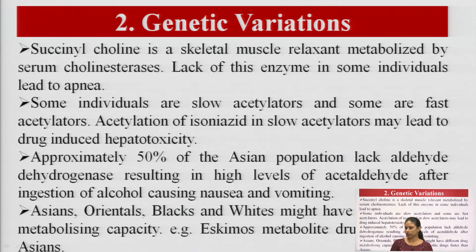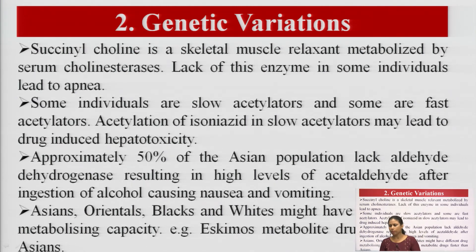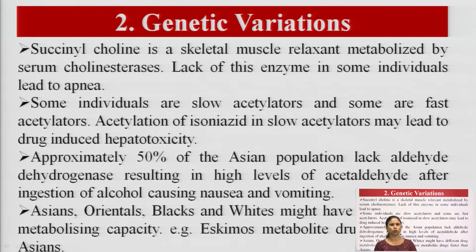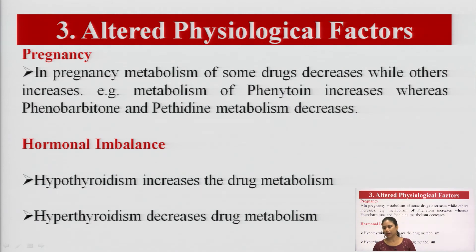Different races — Asians, orientals, blacks, and whites — have different rates of metabolism. For example, Eskimos metabolize drugs faster than the Asian population.